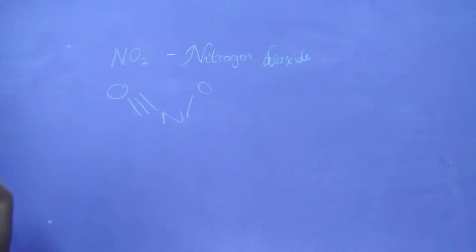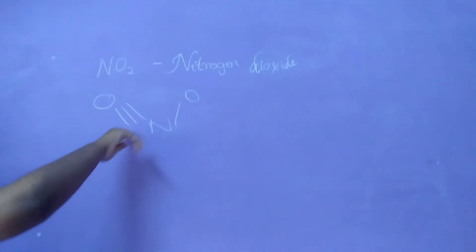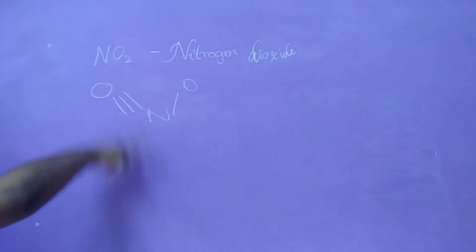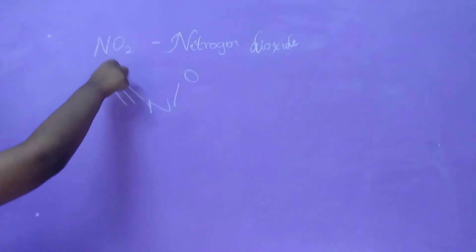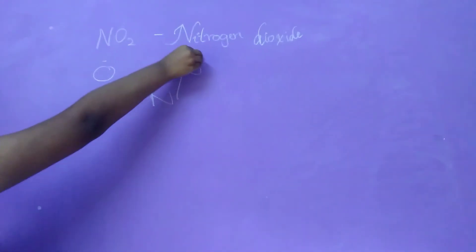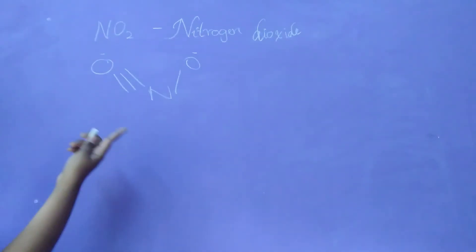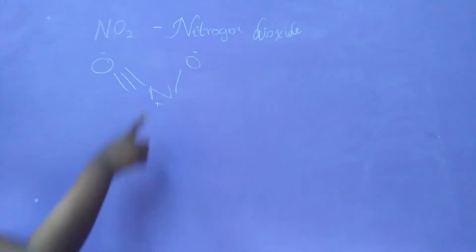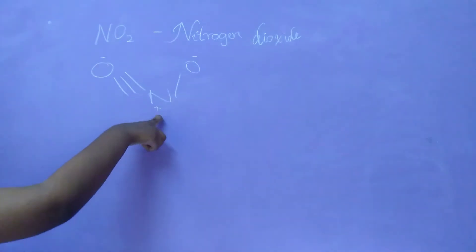Now we have to find which is more electronegative between nitrogen and oxygen. We know that oxygen is more electronegative, so it has a minus sign, and nitrogen is less electronegative, so it should be plus.